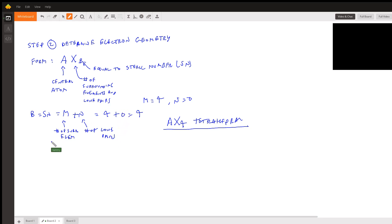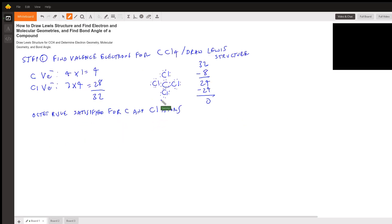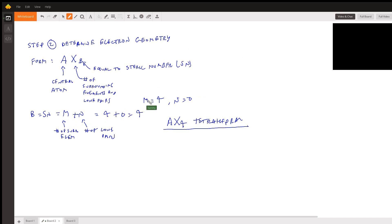So if we go back and look at our Lewis structure, carbon is going to be A, the central atom, and it's surrounded by one, two, three, four chlorine atoms. So the number of atoms that are surrounding the chlorine, that's going to be equal to M. So that would be four.